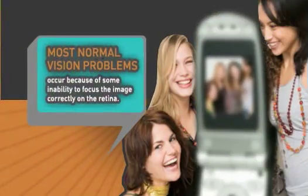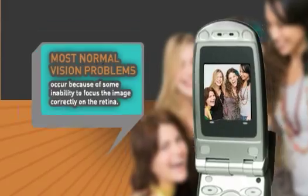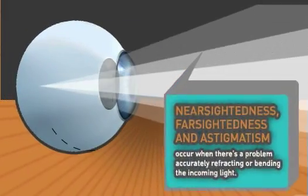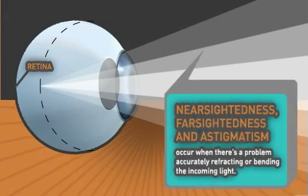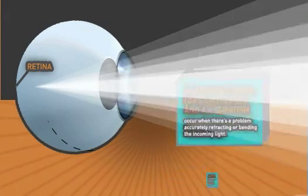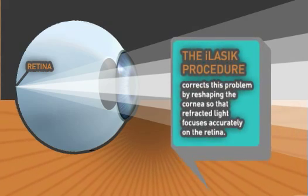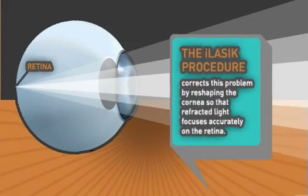Most normal vision problems occur because of some inability to focus the image on the retina. Nearsightedness, farsightedness, and astigmatism occur when there's a problem accurately refracting or bending the incoming light. The iLASIK procedure corrects this problem by reshaping the cornea so that refracted light focuses accurately on the retina.